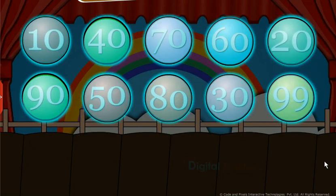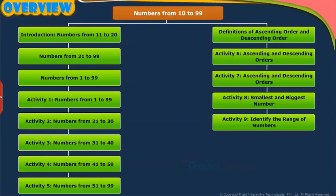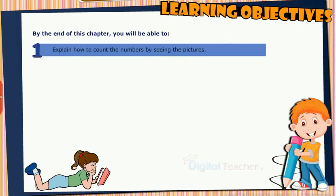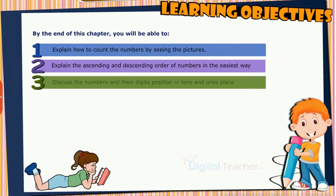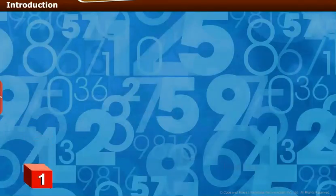Welcome to the chapter: Numbers from 10 to 99. This slide presents the overview of the chapter. By the end of this chapter, you will be able to explain how to count numbers by seeing pictures, explain ascending and descending order of numbers, discuss numbers and their digit positions in tens and ones place, and find out the smallest and biggest numbers.